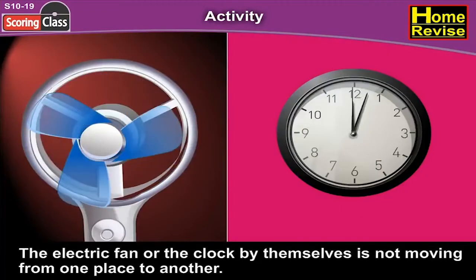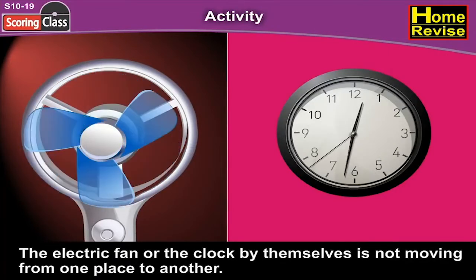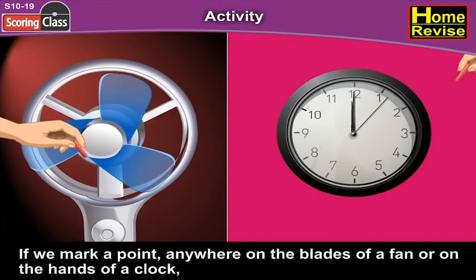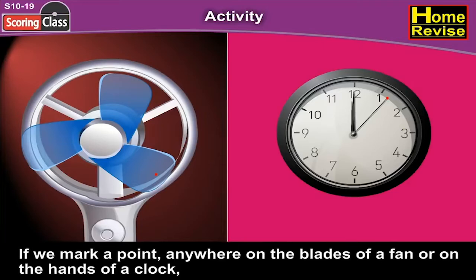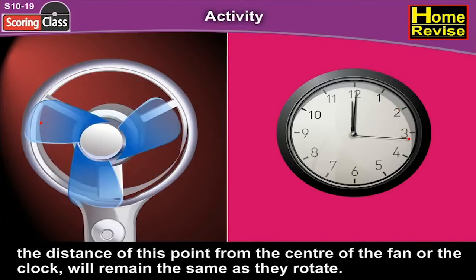The electric fan or the clock, by themselves, are not moving from one place to another. But the blades of the fan rotate, and so do the hands of a clock. If we mark a point anywhere on the blades of a fan or on the hands of a clock, the distance of this point from the centre of the fan or the clock will remain the same as they rotate.